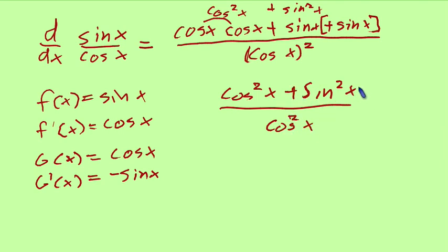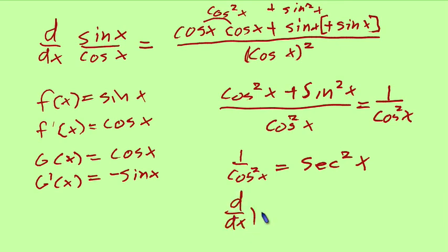Well, you'll remember from your trig functions that cosine squared plus sine squared equals 1. So the top simplifies to 1. You have 1 over cosine squared of x. 1 over cosine squared x is the same as secant squared of x. Secant squared x, that's the derivative of tangent x. How did that happen? Well, sine over cosine is tangent.